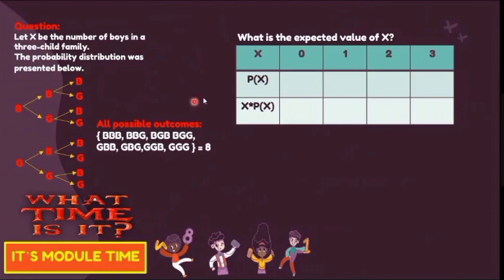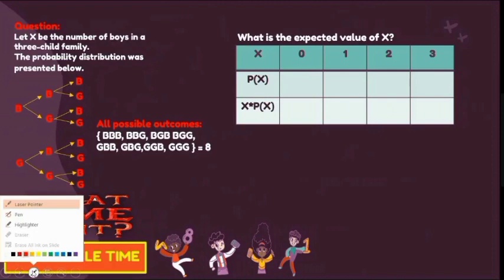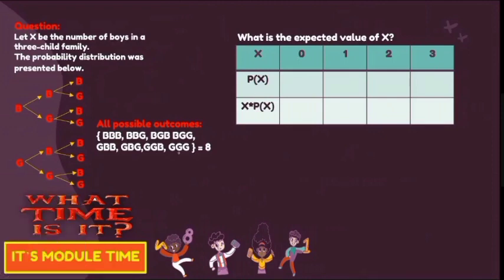The value of x depends on the number of boys. For zero boys, there is only one outcome (Girl-Girl-Girl), so the probability is 1/8. For one boy, there are three outcomes, so the probability is 3/8. For two boys, there are three outcomes, so the probability is 3/8. For three boys, there is one outcome (Boy-Boy-Boy), so the probability is 1/8.